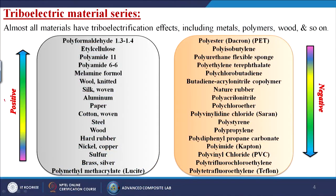Depending upon their triboelectrification, materials have been divided into two parts: one is called positive and another is called negative. Almost all materials have triboelectrification effects including metals, polymers, woods, and many others.